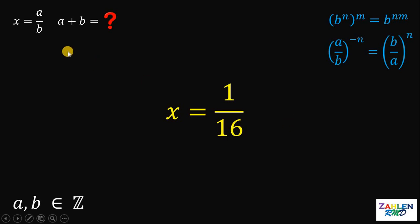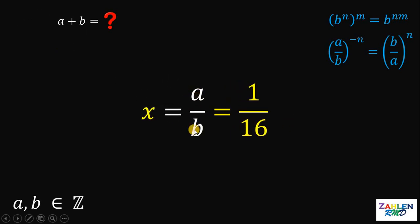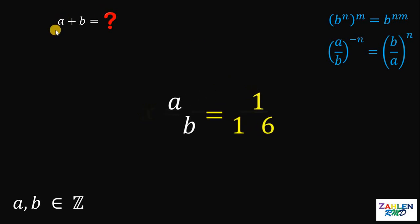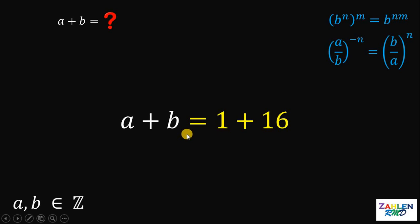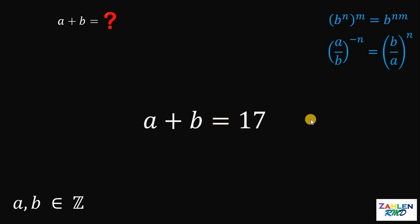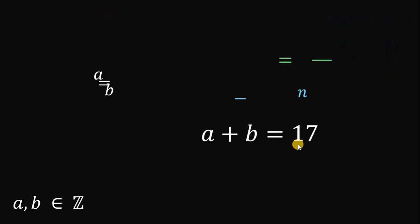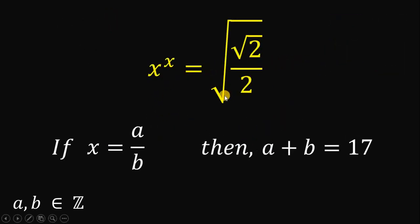Take note that x can be written as a over b wherein a and b are both integers. Therefore, we can say that a equals 1 and b equals 16. We want the sum of a and b, so a plus b equals 1 plus 16, which is simply 17. Therefore, given that x raised to x equals square root of square root of 2 over 2, wherein x equals a over b and a and b are both integers, the value of a plus b is equal to 17, because x is 1 over 16. And as always, we are done.